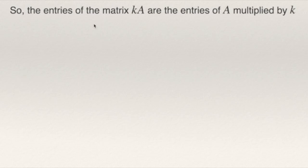What you need to do is multiply every entry of the matrix by the scalar k. So the entries of matrix kA are the entries of A multiplied by k.